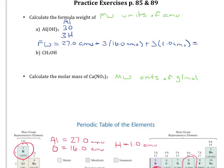So the answer is going to be 78.0 atomic mass units, that is the formula weight for aluminum hydroxide.